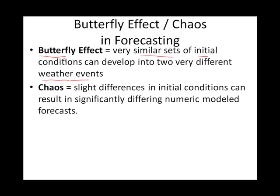Kind of related to that is something generally called chaos. It says that inherent to all measurements — like the initial conditions we're measuring, such as temperature, pressure, wind speed, wind direction, and humidity — there is a little bit of uncertainty.